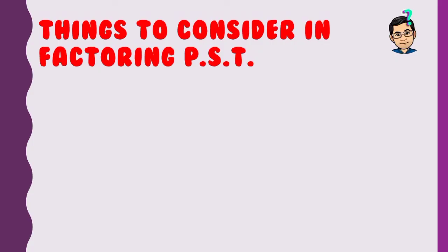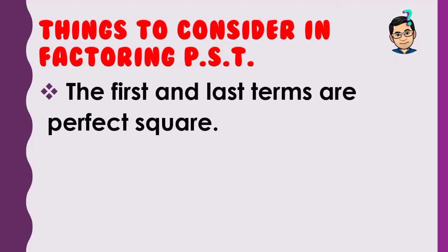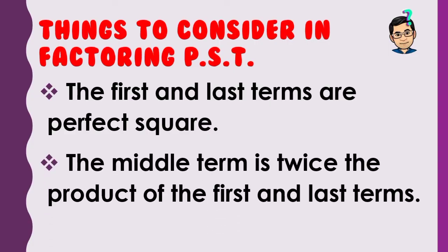Things to consider in factoring perfect square trinomial: first, the first and last terms must be perfect squares. Second, the middle term must be twice the product of the square roots of the first and last terms. Even if the first and last terms are perfect squares, we still need to check whether the middle term satisfies this condition.